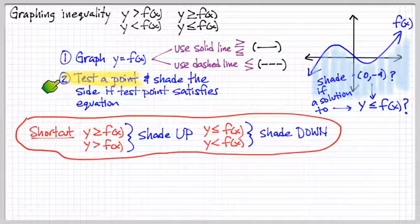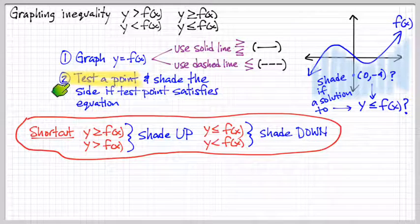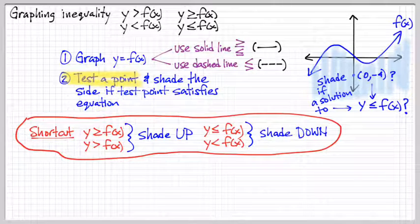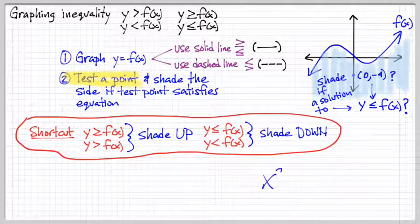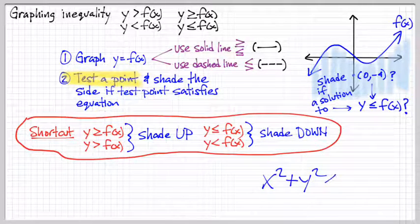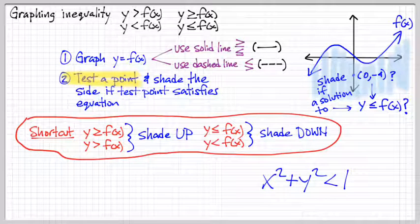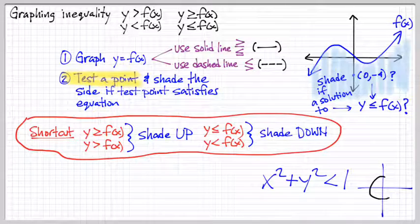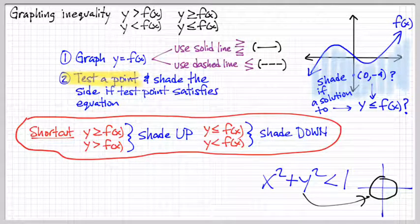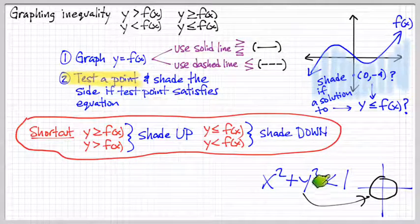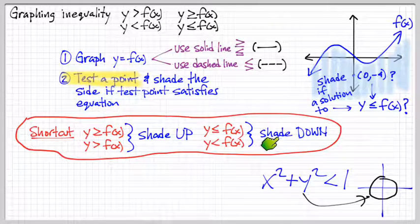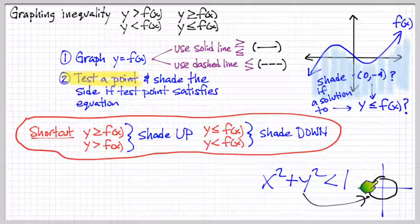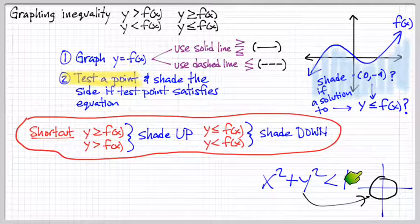I want to emphasize this idea of a test point being kind of a foolproof way because maybe we had something like this: x squared plus y squared is less than 1. And in this case, that's actually a circle right here. So, according to this rule, do we shade down? No, we don't shade down. It's more like, do we shade inside or outside?